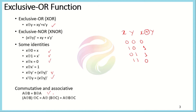Third, the exclusive OR operation is associative. This means that for a three-variable exclusive OR function, taking the exclusive OR of the first two or the last two variables gives equivalent results. Because the exclusive OR operation obeys both the commutative and associative laws, it can be extended to three, four, or multiple input systems.